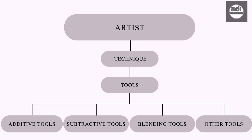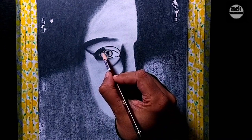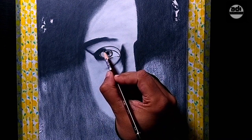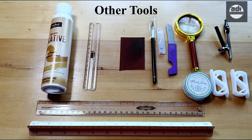For an artist to draw, he first needs to know how to use his tools properly and control them. The tools can be categorized into four basic groups: additive tools, subtractive tools, blending tools, and others.